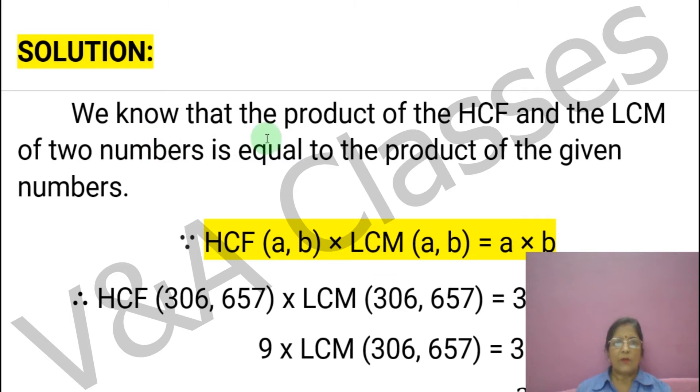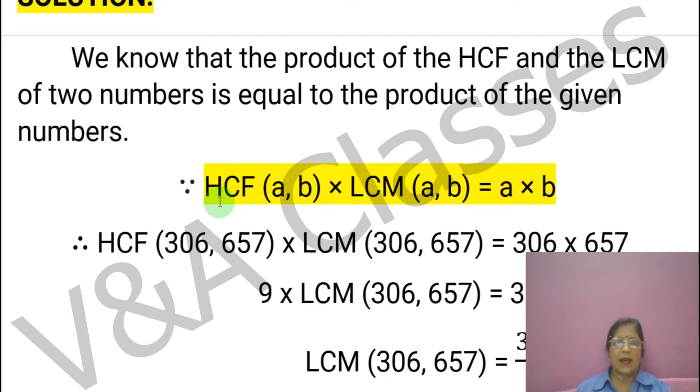Let's start the solution. We know that the product of the HCF and the LCM of two numbers is equal to the product of the given numbers. For this, we will use this formula: HCF of A and B multiplied by LCM of A and B equals to A multiplied by B. This is for two numbers.